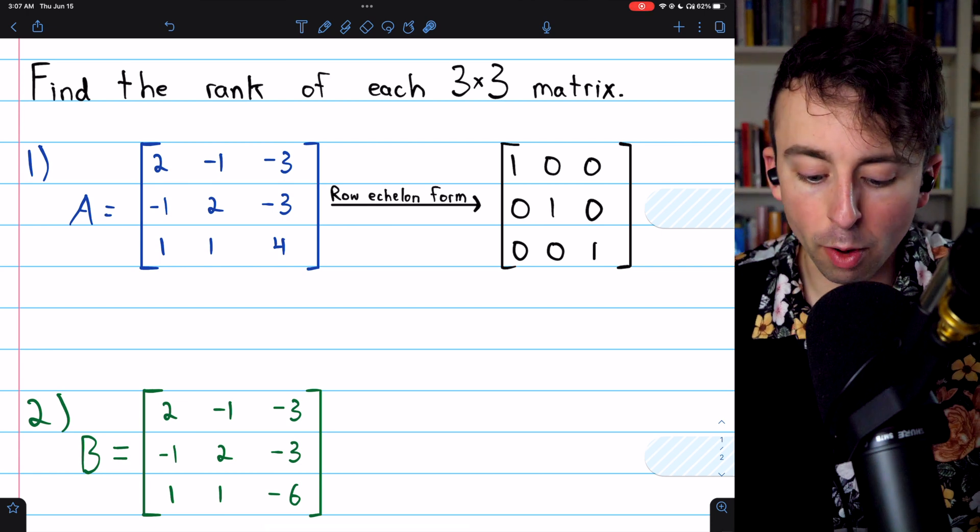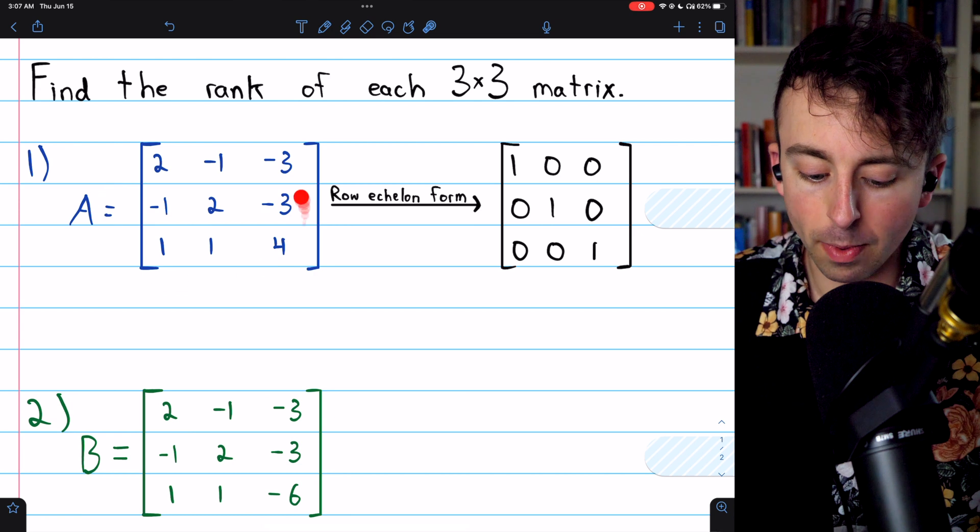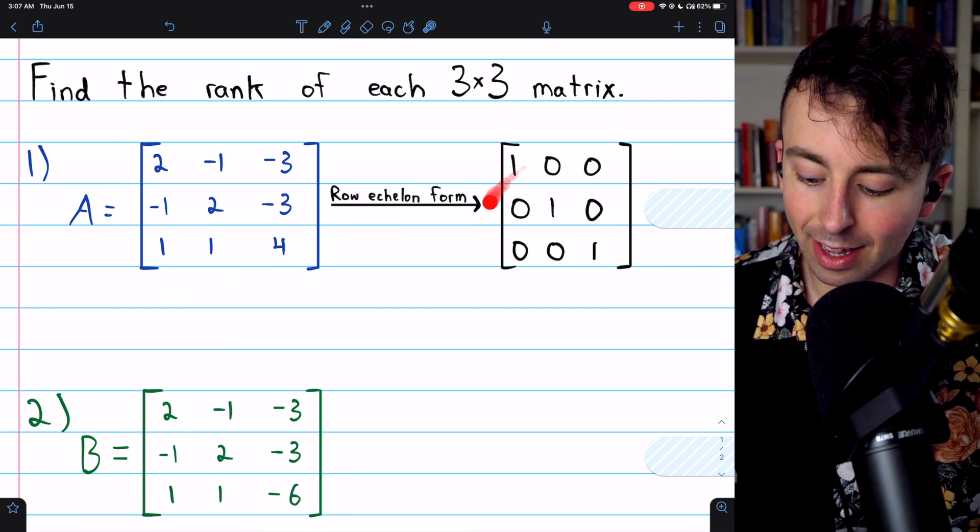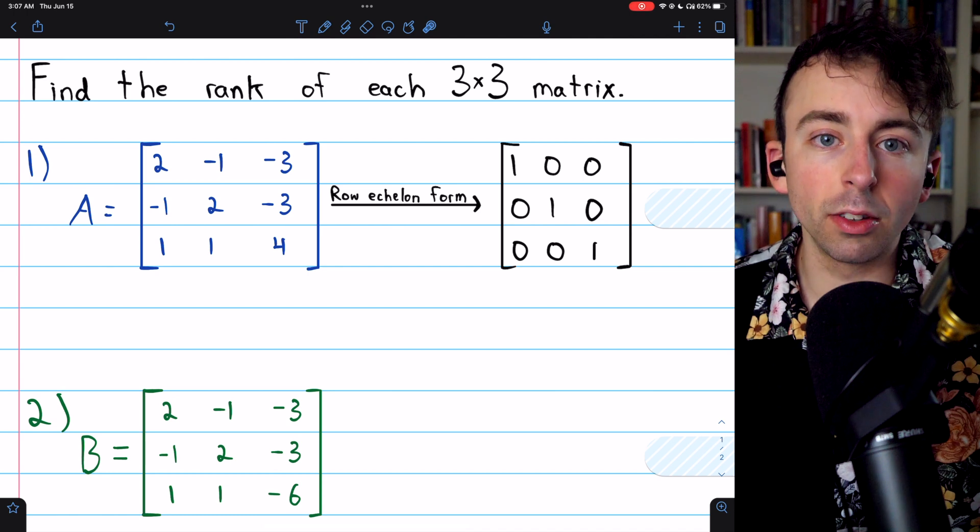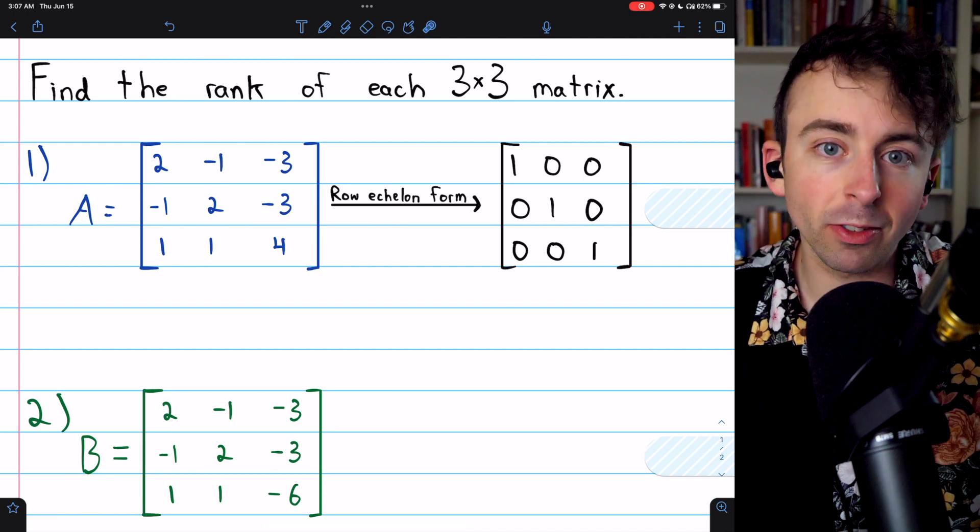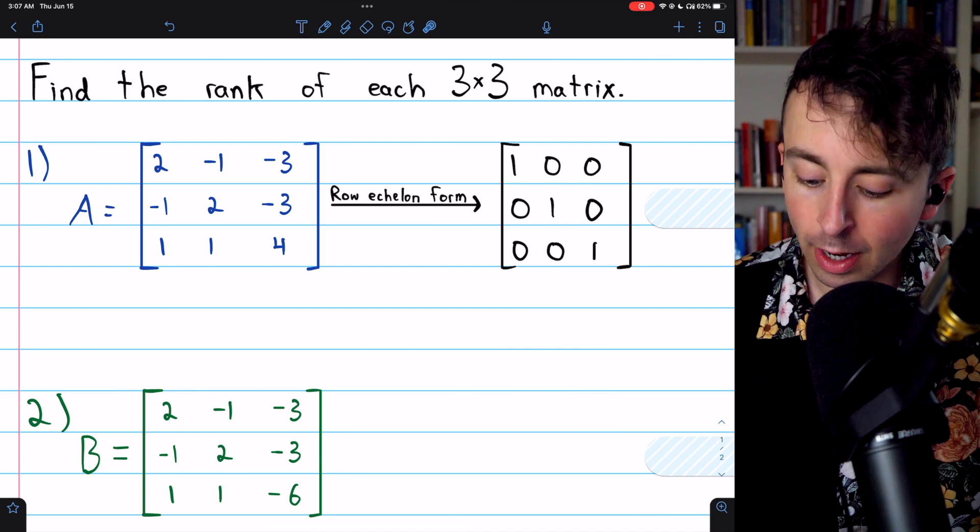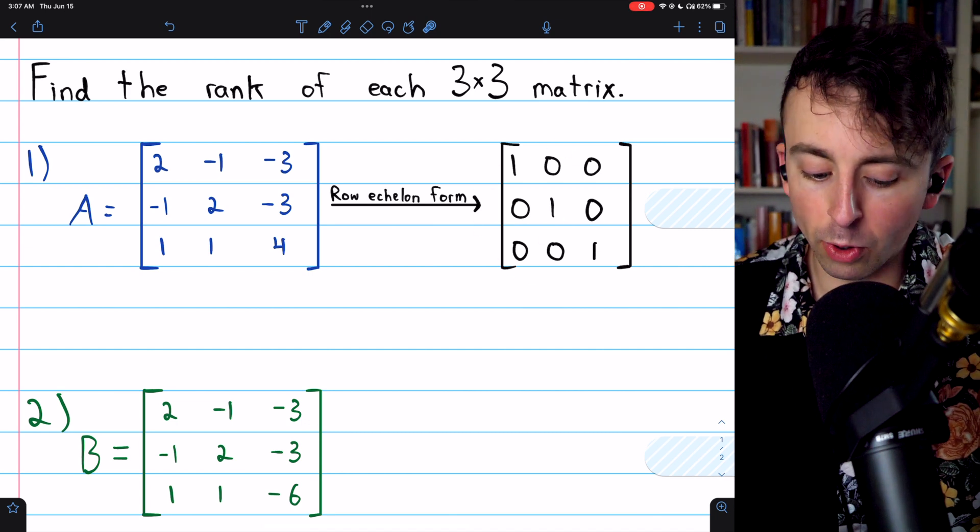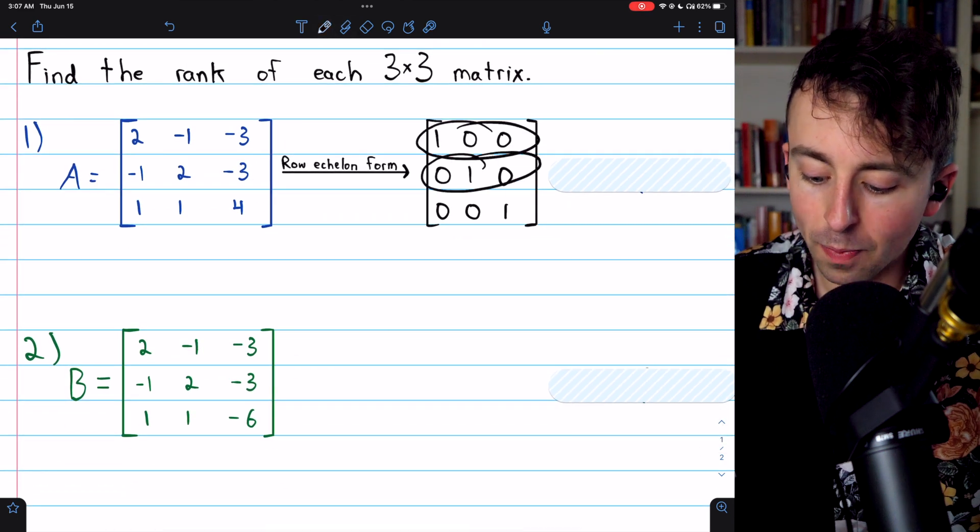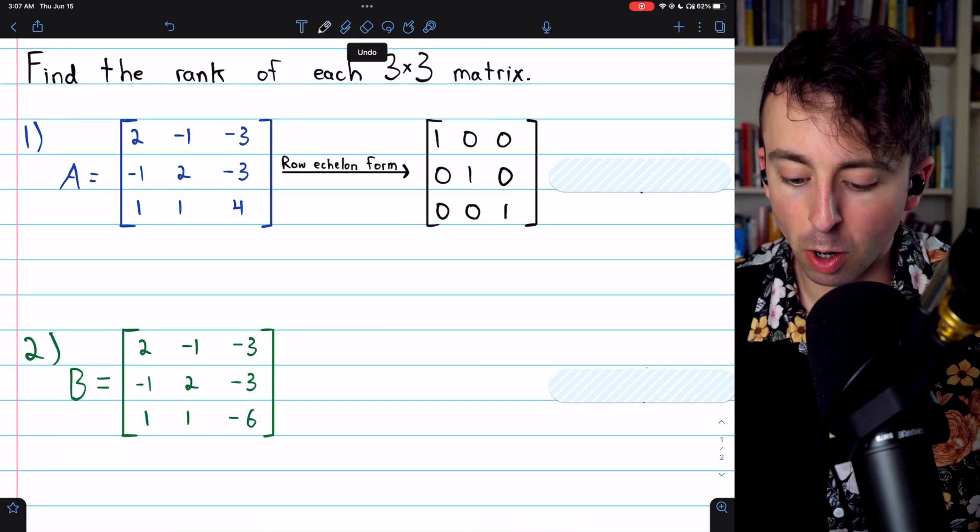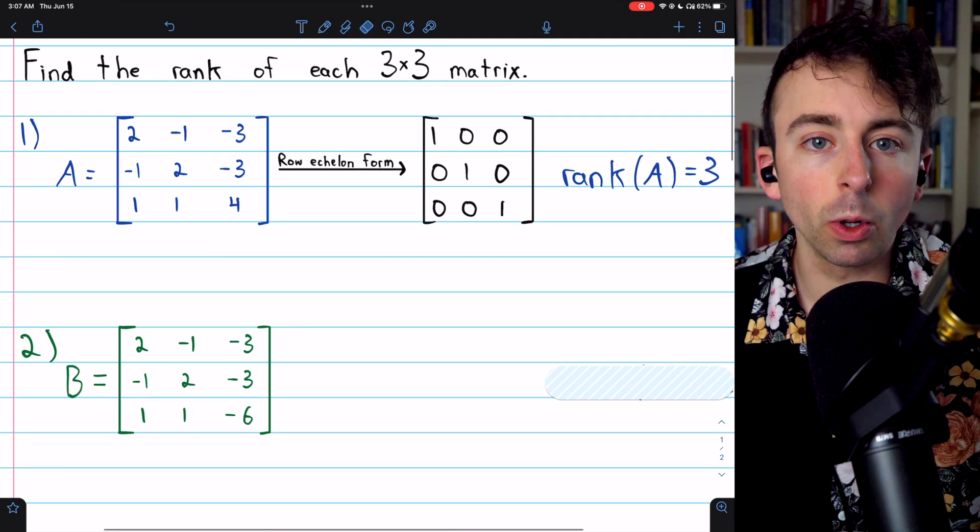If we perform elementary row operations to find the row echelon form of A, we get this. This is actually the reduced row echelon form. You could stop simply at row echelon form, and you would still get the same thing for the rank. When we put this in row echelon form, we see we get the identity matrix, which has one, two, three non-zero rows. So the rank of A is equal to three.